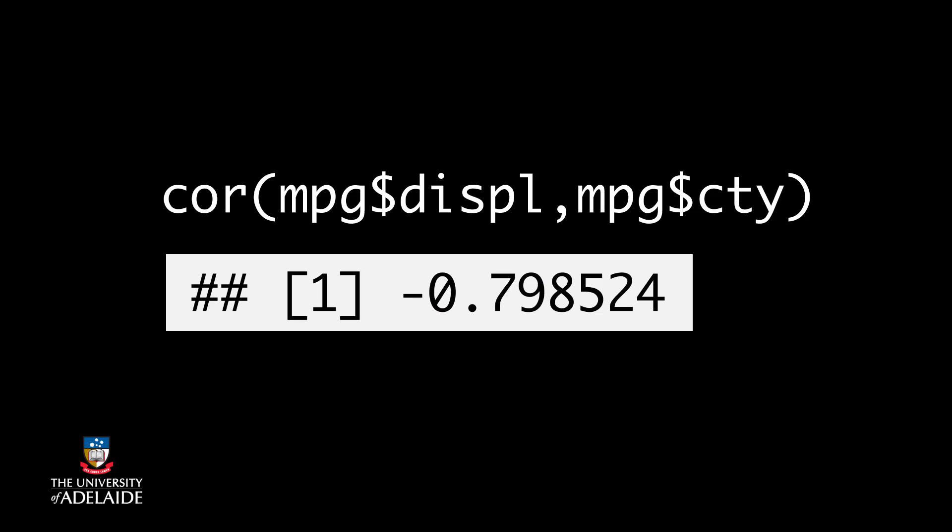You can compute the Pearson correlation in R using the cor function. For example, if we wanted to compute the correlation between engine size and city fuel efficiency in the MPG dataset, we'd type this. To get negative 0.8, a strong negative relationship.